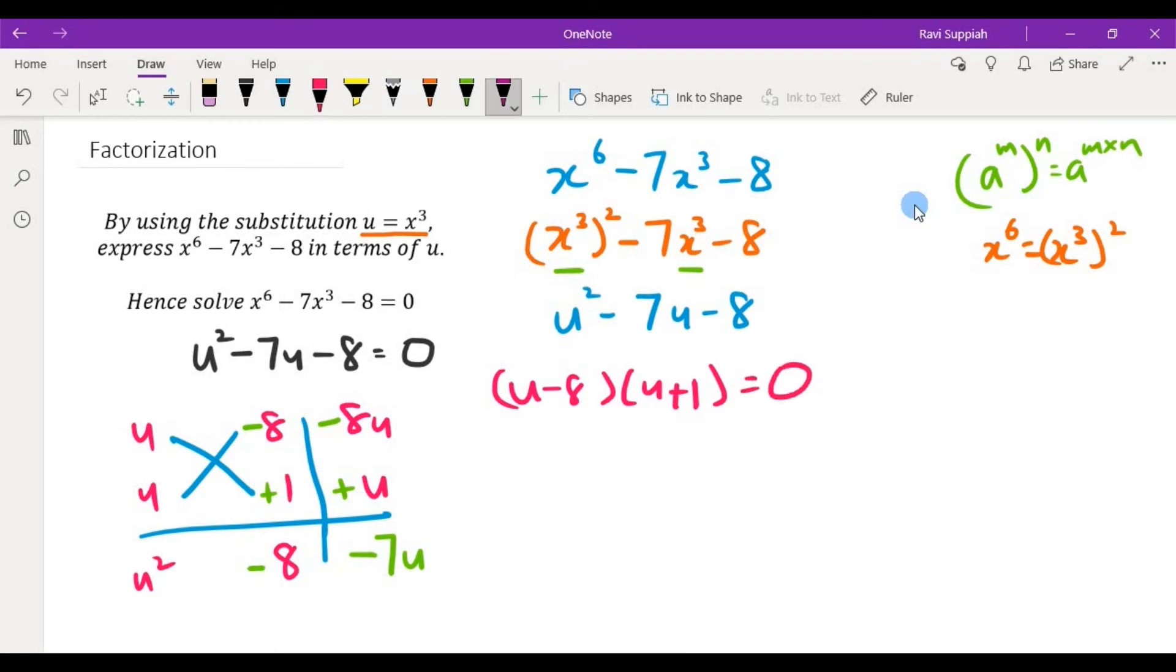So that leaves us with u minus 8 equals 0 and u plus 1 equals 0. u equals 8, u equals minus 1.